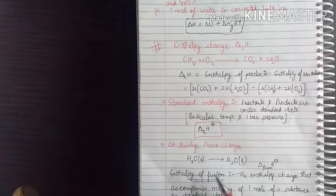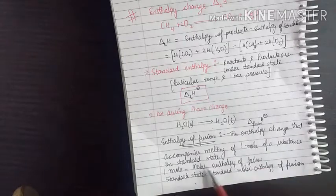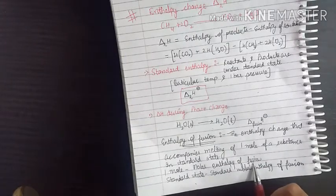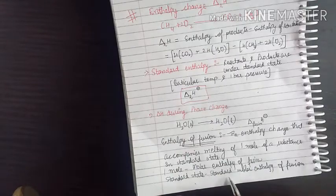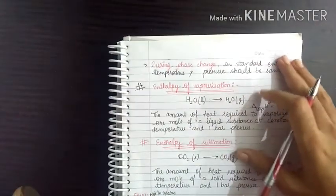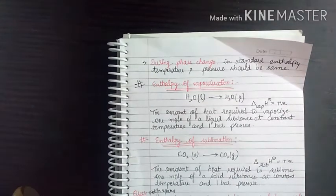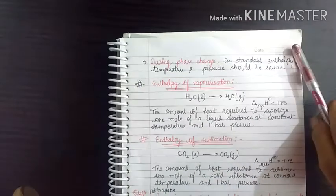For 1 mole of substance going from solid to liquid, we call this the standard molar enthalpy of fusion. During phase change, for standard enthalpy, the temperature at the start and end should be the same, and the pressure should also be the same.